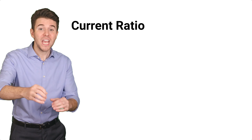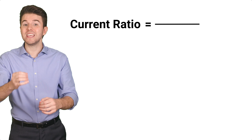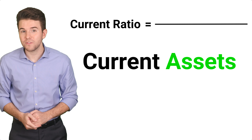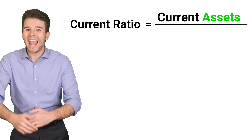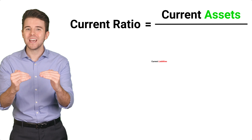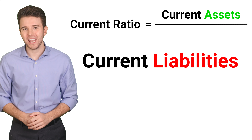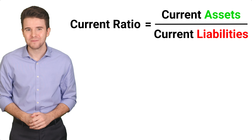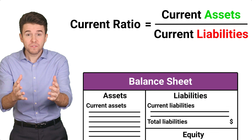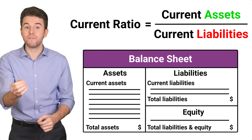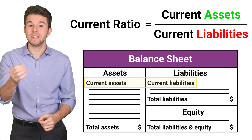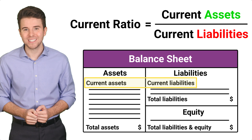To calculate the current ratio, you simply take the current assets of a company and divide by its current liabilities. Both of these numbers can be found on the company's balance sheet.